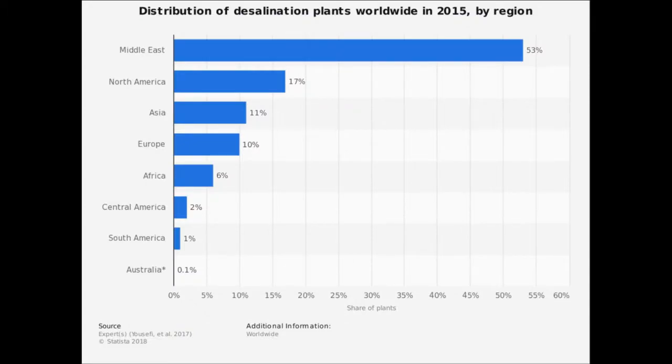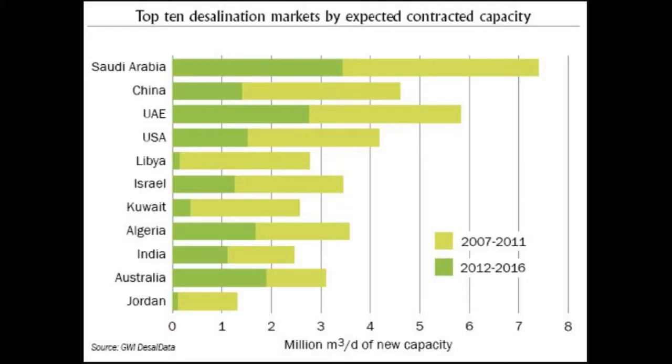North America as a whole is responsible for only about 17% of the desalinated water produced globally each year. The largest producers are in the Middle East region, which leads the globe producing over 50% of the world's desalinated water.